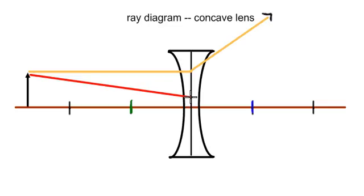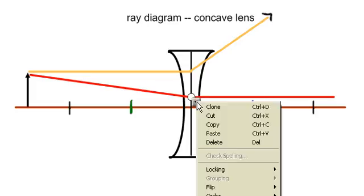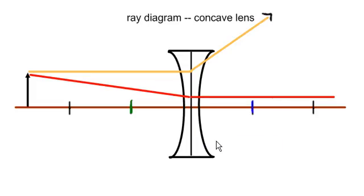Once it hits the lens, as it's being refracted, it gets sent out parallel to the principal axis. So now we have that line there parallel to the principal axis. I have an extra one in there, let's just get rid of that extra one. And there we have our first two lines drawn. We'll put a little arrow on the end of that one.